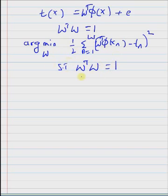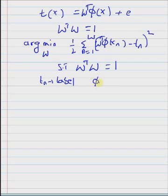This is the optimization function with the normalization constraint on the weight vector w, such that w transpose w equals 1. Here tn is a list of labels that is either 1s or minus 1s for the binary classification problem, and phi of xn is the non-linear feature transformation function.